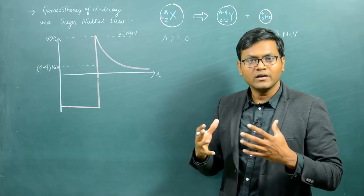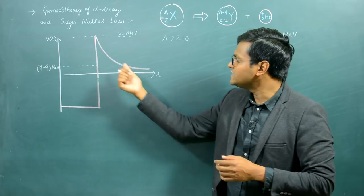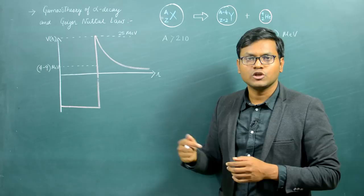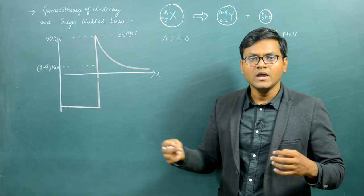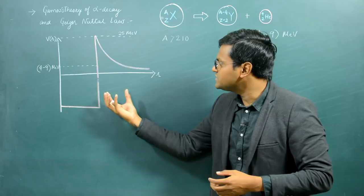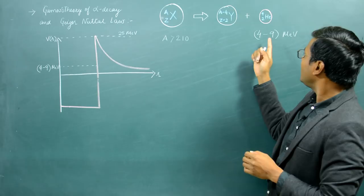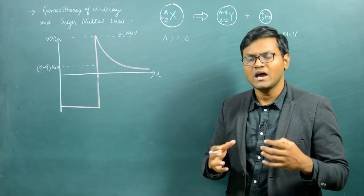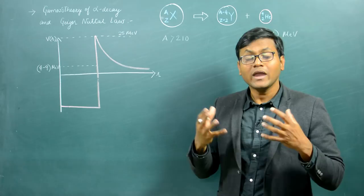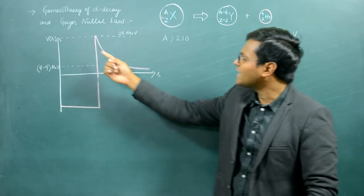As the alpha particle comes out of the nucleus, it experiences a Coulombic repulsion, which is a function of 1/R, where R is the radial distance from the center of the nucleus. The alpha particle is seen to have maximum energy of around 4 to 9 mega electron volts. However, calculations show that different nuclear configurations have a potential barrier with a maximum height of around 25 to 30 mega electron volts.